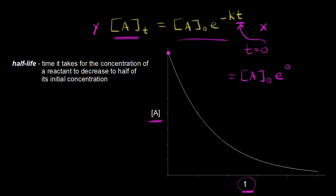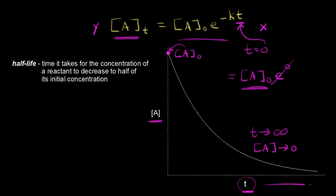E to the zero is, of course, one. So our initial concentration is this point right here at time equals zero — this is obviously our initial concentration. And as time approaches infinity, your concentration of A goes to zero. So as you go out further, obviously your concentration of A is going to approach zero. That's the idea of an exponential decay graph.